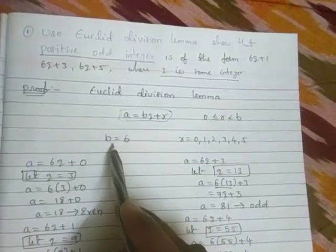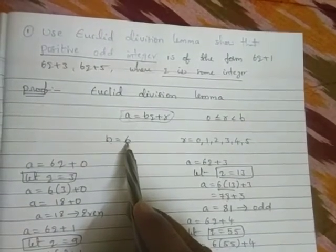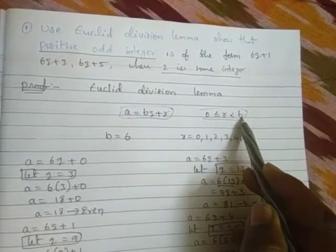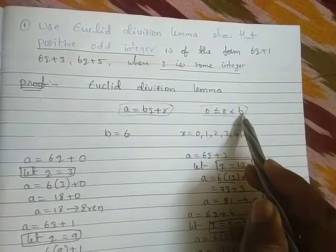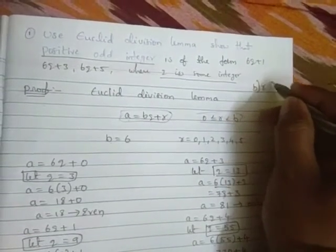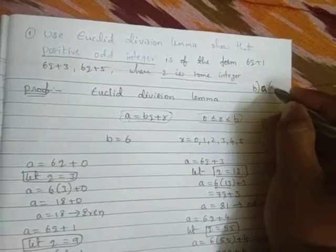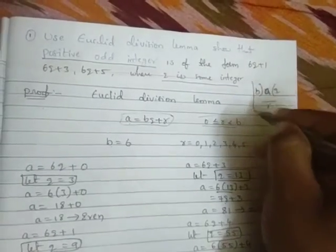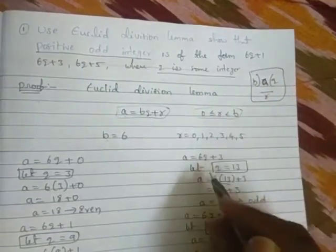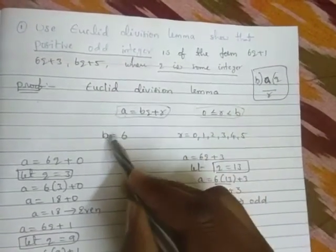Now in the formula, what is there? r less than b means remainder is always less than divisor. This is the divisor. The remainder is always less than divisor.